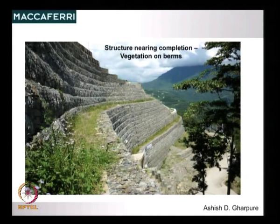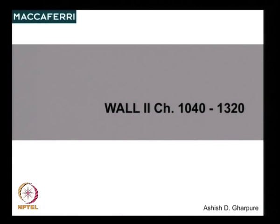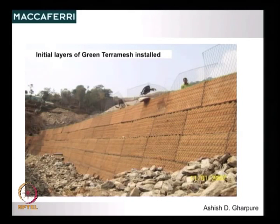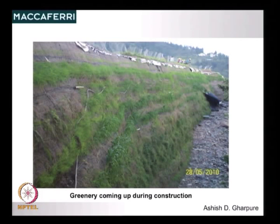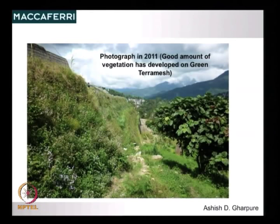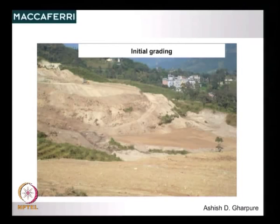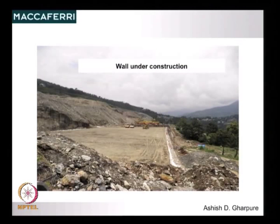When the structure was built, you can see the number of layers with small setoffs — each layer has just about a one-inch offset as you build. This is Wall 2 — another location. You can see the grading work, the green teramesh structure installation, and in a couple of months it started growing green. You can see how high it is going, with rolling compaction. By 2011 the complete structure was in place.